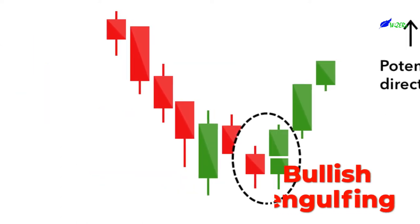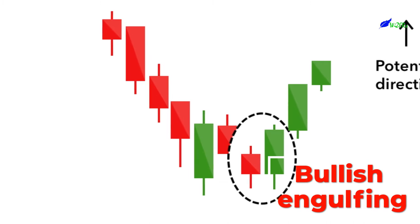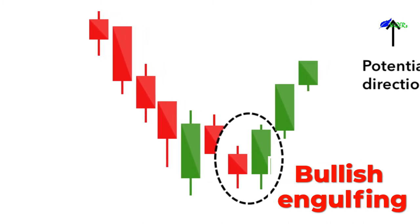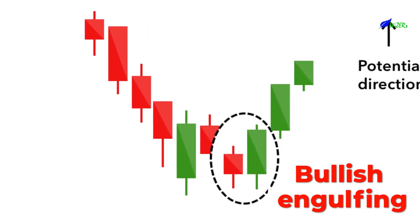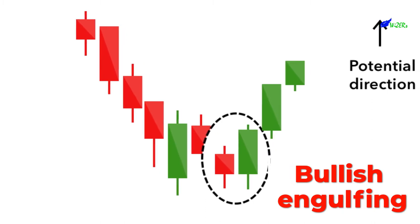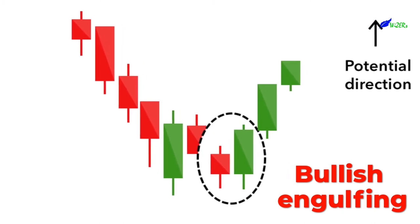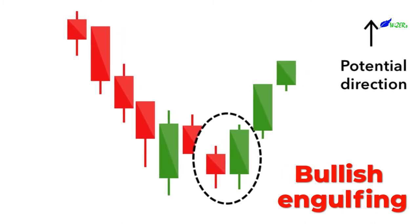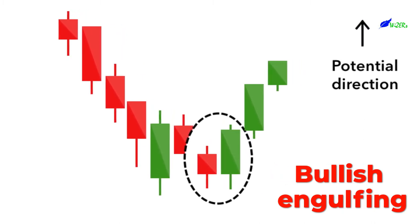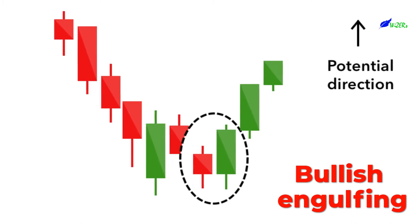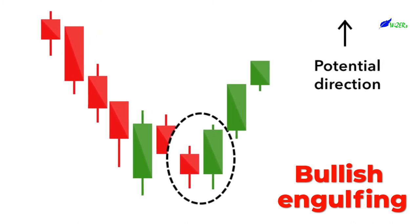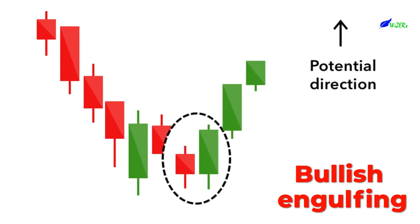Bullish Engulfing. The bullish engulfing pattern is formed of two candlesticks. The first candle is a short red body that is completely engulfed by a larger green candle. Though the second day opens lower than the first, the bullish market pushes the price up, culminating in an obvious win for buyers.